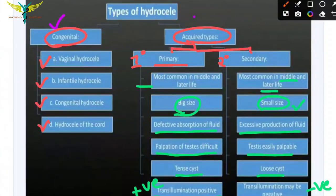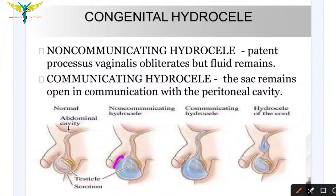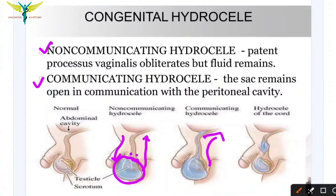Congenital hydrocele is present at birth, whereas acquired hydrocele occurs in later life. Congenital hydrocele is of two types: non-communicating and communicating. For context, the tunica vaginalis is the covering sac while the processus vaginalis is the opening. In non-communicating congenital hydrocele there is a patent processus vaginalis but the fluid remains locally with no communication to the abdominal cavity. In communicating congenital hydrocele the sac remains open and communicates with the peritoneal cavity.